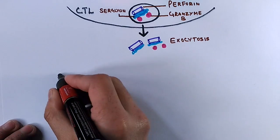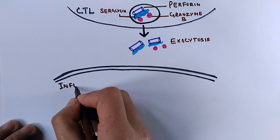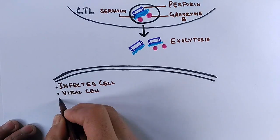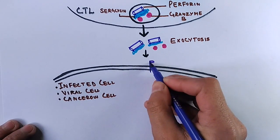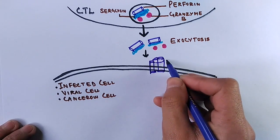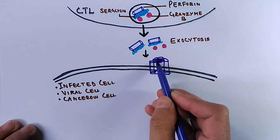So here it detaches itself from the Perforin, and this Perforin goes to the cell membrane and attaches to the plasma membrane of infected cell. This Perforin then starts making pores, it makes tubes towards the infected cell.